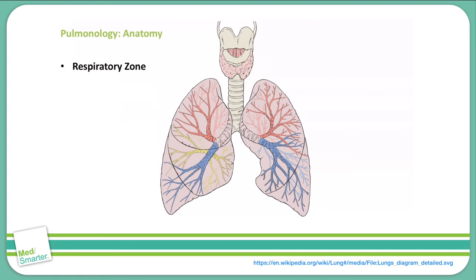The respiratory zone is beyond the conducting zone and consists of respiratory bronchioles, alveolar ducts, and alveoli. This is going to be in the periphery of the lung and the very small airways that we see in those regions.